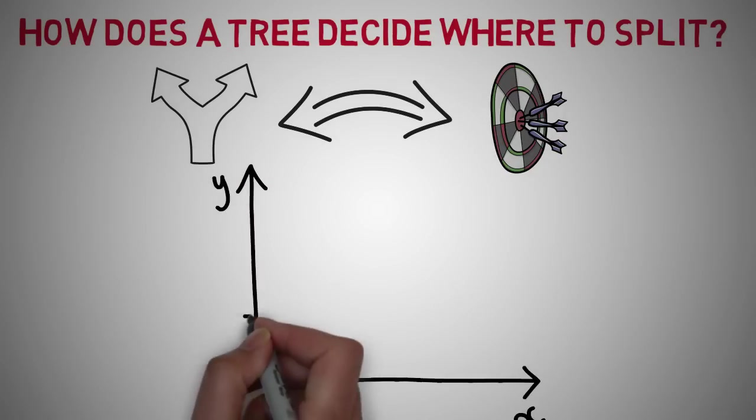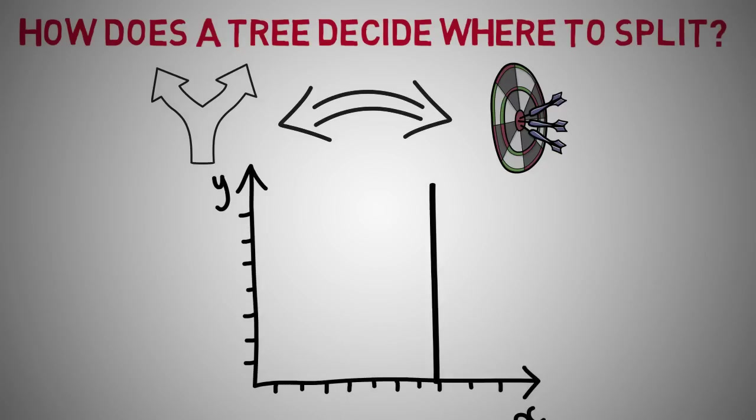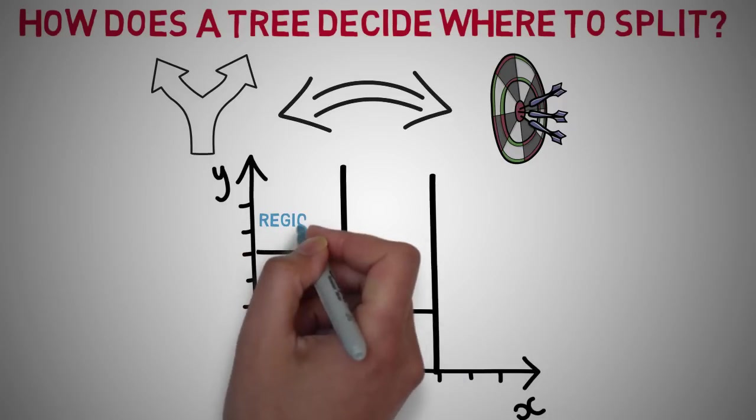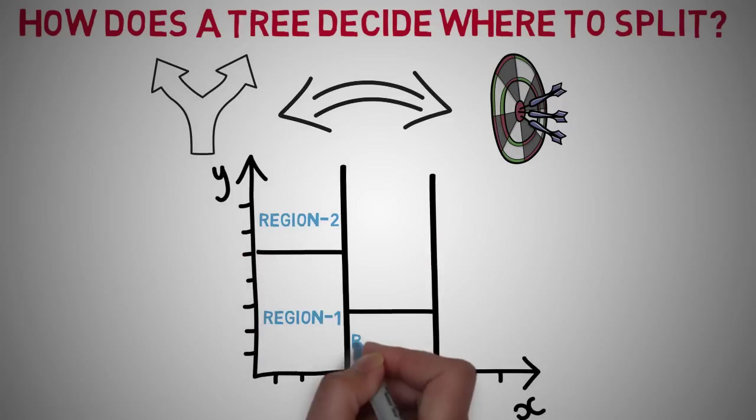The decision criteria is different for classification and regression trees. Decision trees use multiple algorithms to decide to split a node into two or more sub-nodes. The creation of sub-nodes increases homogeneity of resultant sub-nodes. In other words, we can group our data in regions based on data that have similar traits.